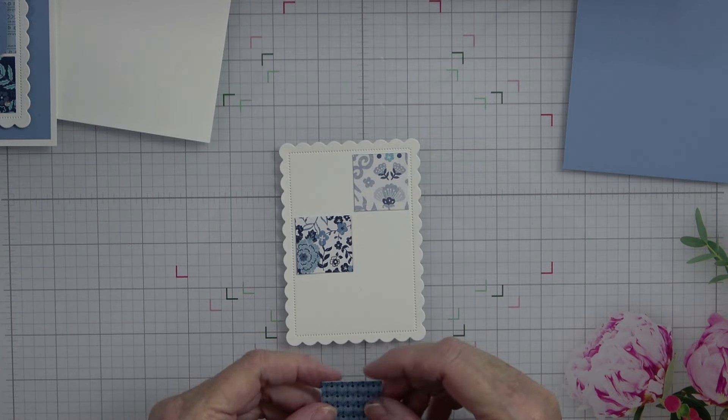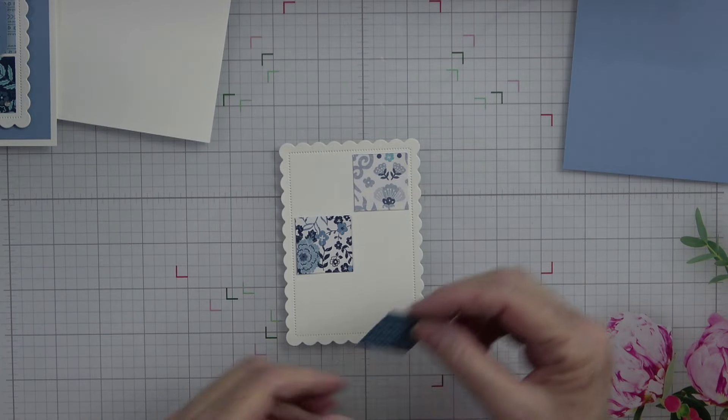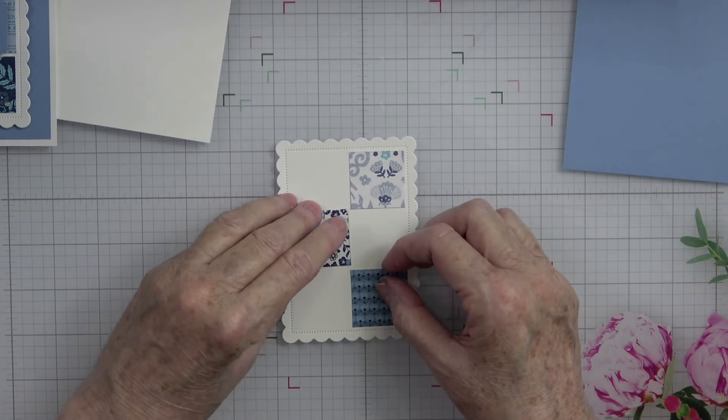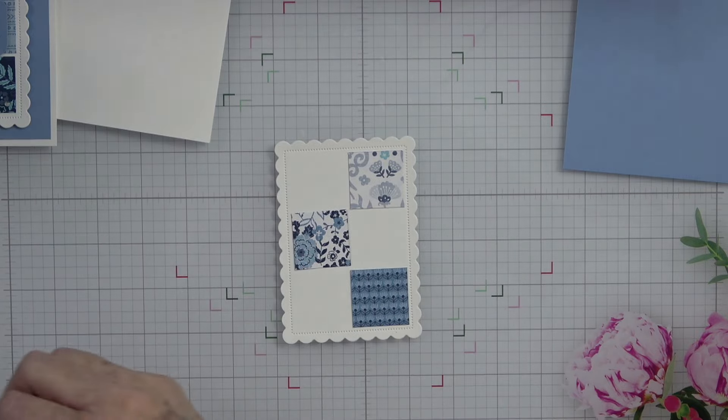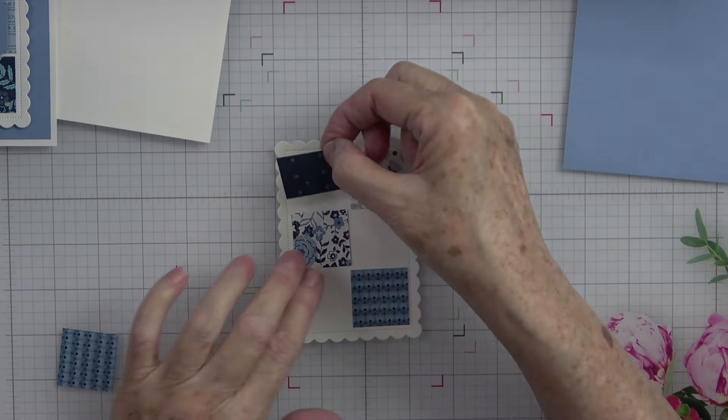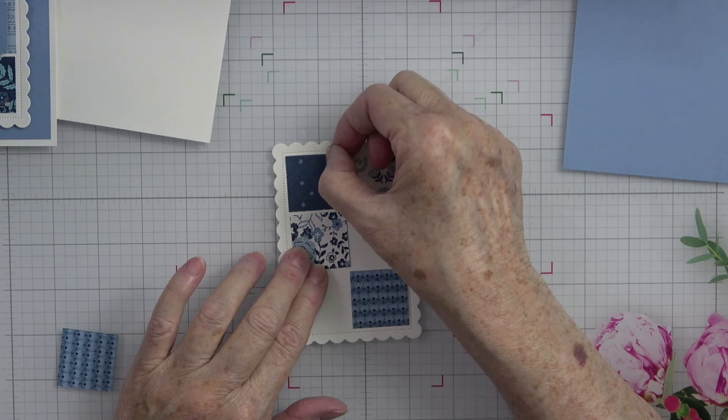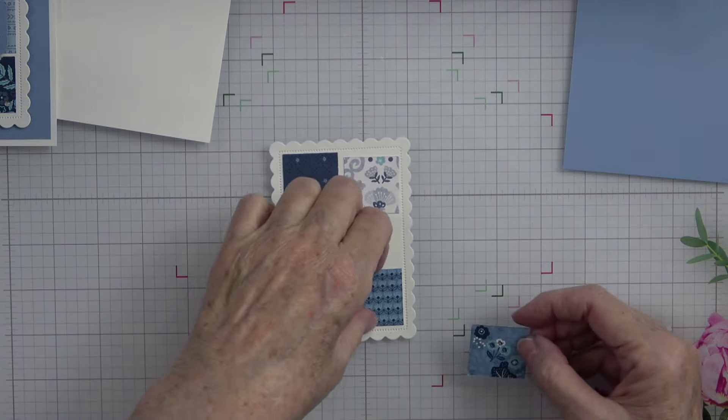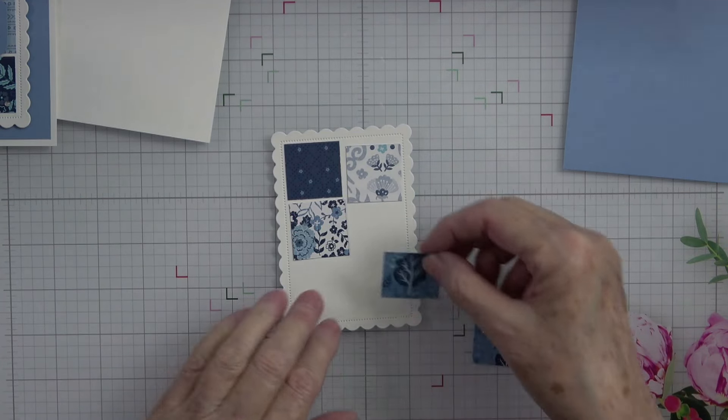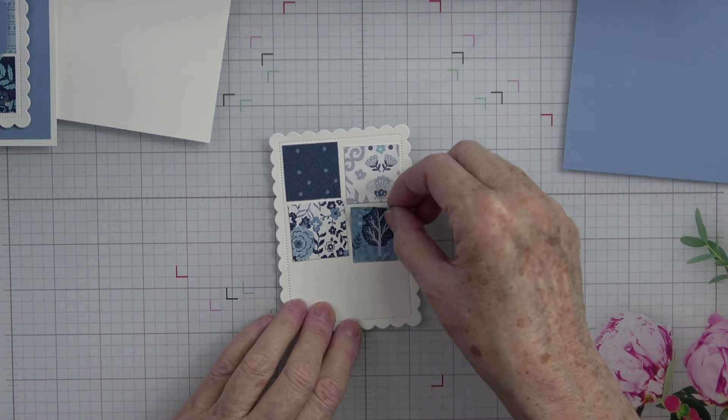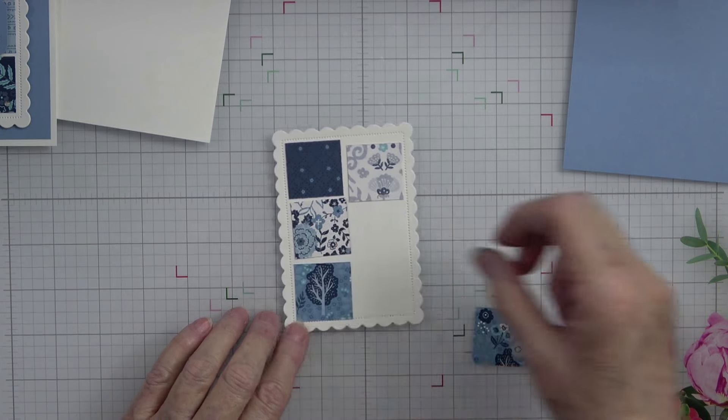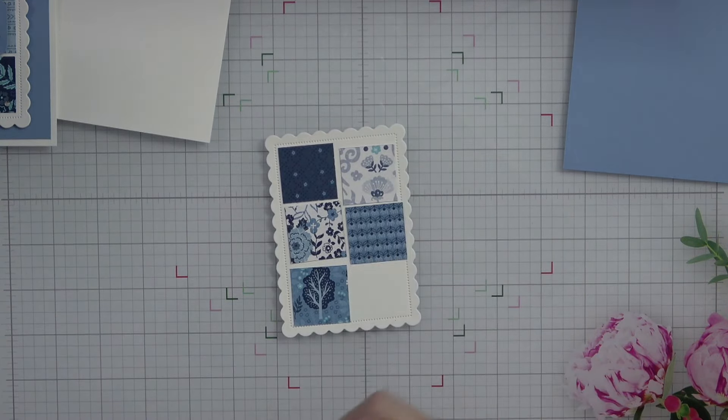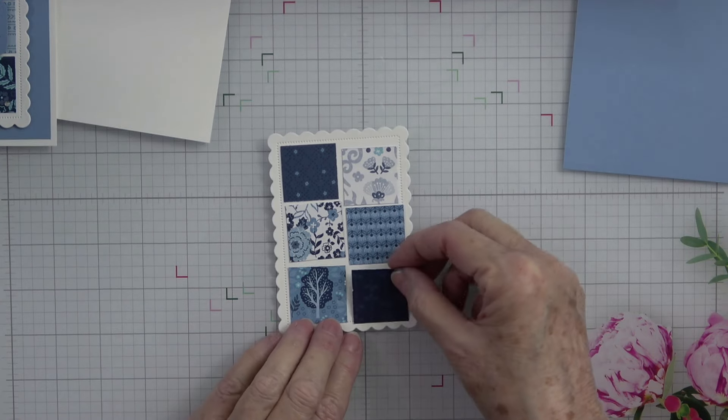What I like to do is I like to get a dark and a light. I like to kind of change it up just a little bit. Little tree is really cute so we're going to put that right there. This one here and this one right here.